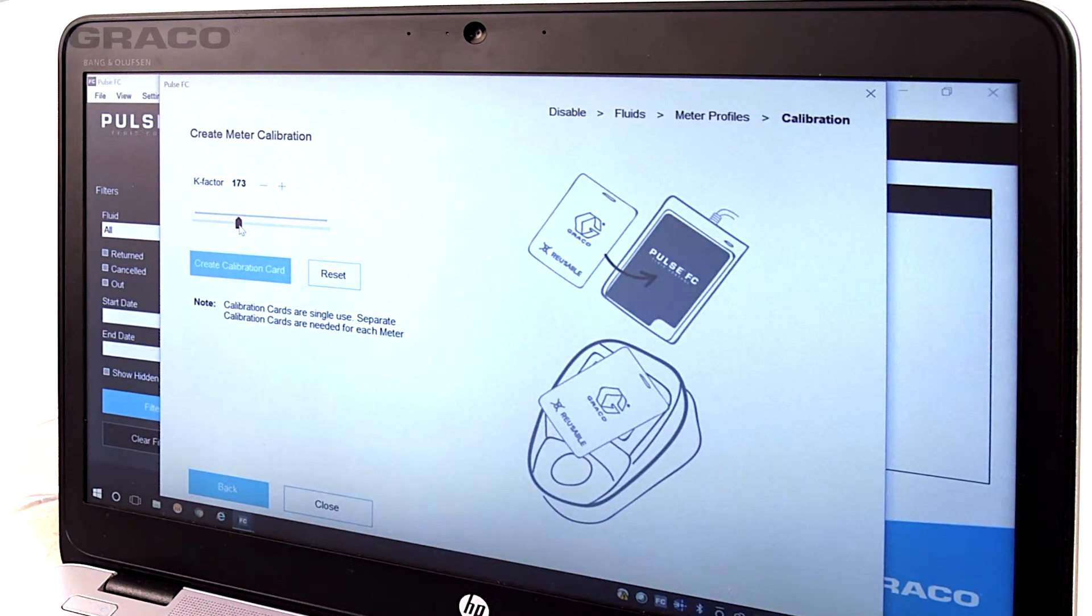The Create Meter Calibration pop-up screen appears. Select the K factor for the meter by moving the slider to the appropriate number. Click on Create Calibration card. The message Meter Calibration Successfully Programmed to NFC Device appears.